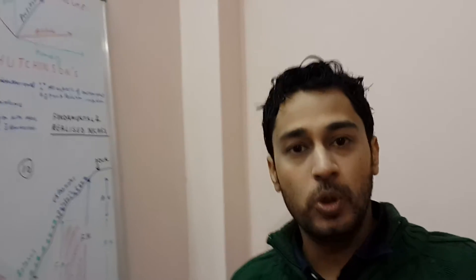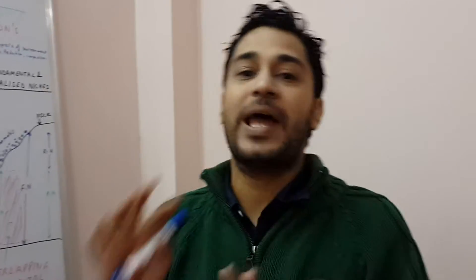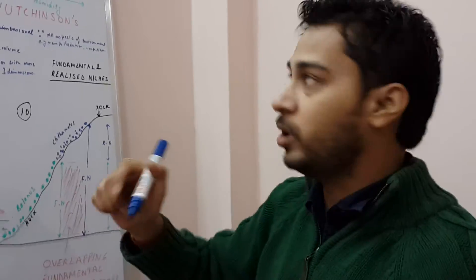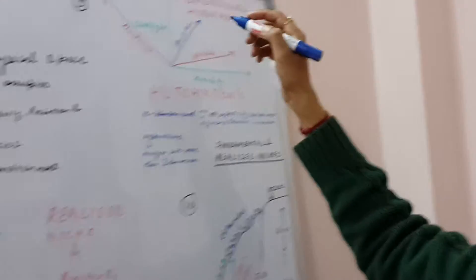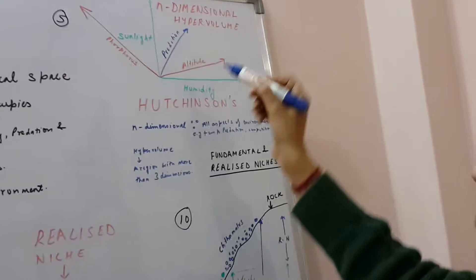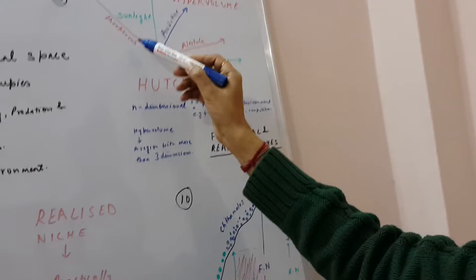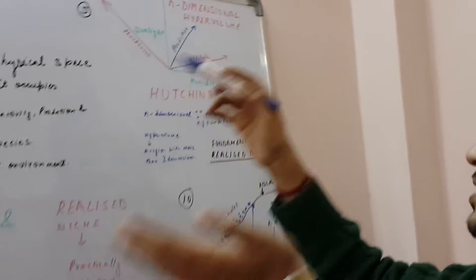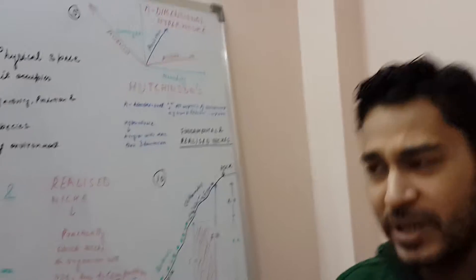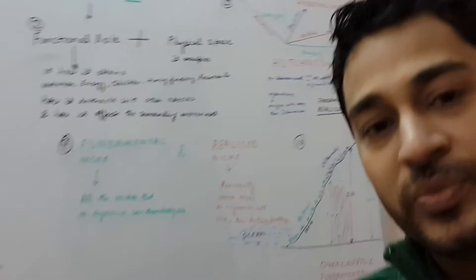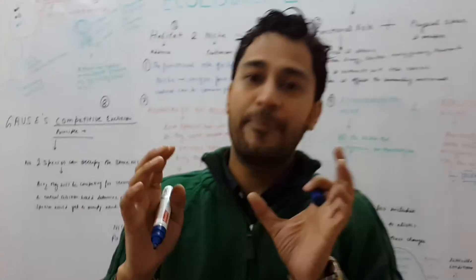Now, hypervolume refers to a region that has more than three dimensions. So naturally I cannot draw it on the board. It's only a basic exercise, a mock exercise that I've done to explain it like sunlight, humidity, altitude, predation, requirements of phosphorus or nitrates. But it's actually not possible to draw it. So n-dimensional hypervolume.